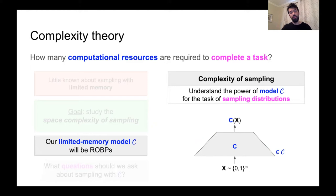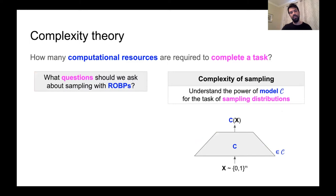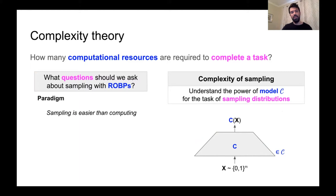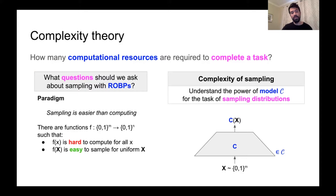Now we'd like to know what are some interesting questions to ask about sampling with ROBPs. There is a paradigm that appears in a lot of papers on the complexity of sampling: sampling is in many cases easier than computing. There are functions such that computing the function on every possible input is very hard, but sampling the output distribution of this function given a uniform input is very easy. As an example, consider setting F to the inverse of a one-way permutation — it'll be hard to compute F, but the output distribution is just a uniform random variable, which is very easy to sample.